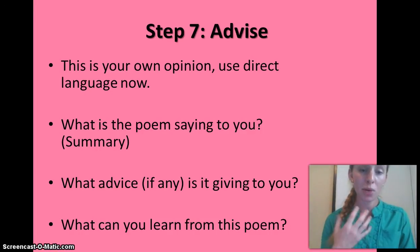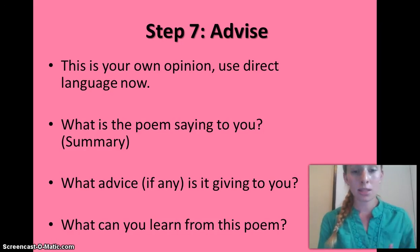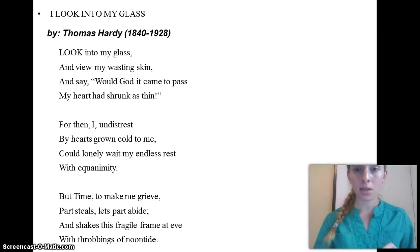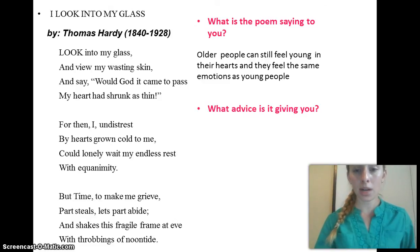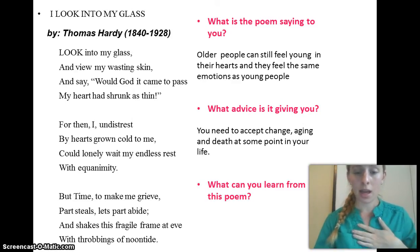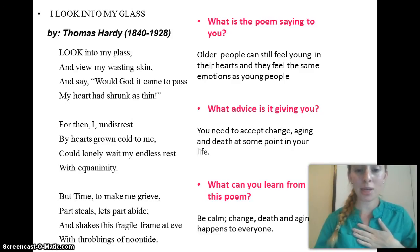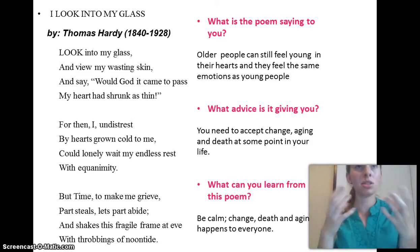Now the last step — Advise — is where we really find the meaning of the poem. We talk about our own opinions and use direct language now that we've had the time to analyse everything. What is it saying to me? Older people can still feel young in their hearts and feel the same emotions as young people. What advice is it giving me? That I need to accept change, ageing, and death at some point in my life. And what can I learn? I can learn that I should be calm — change, death, and ageing happen to everyone. Think of society and other people.